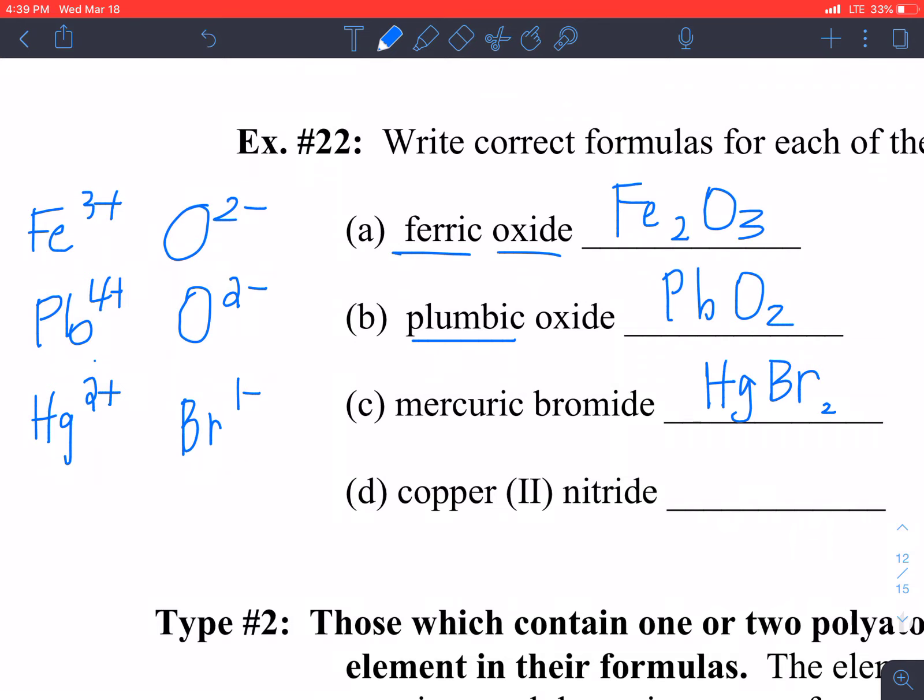And then copper 2 nitride. So copper 2, nitride is N3-, we crisscross those. Okay, very good.